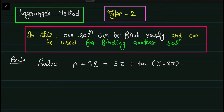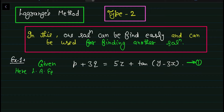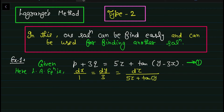Let's understand this with an example. We are given a differential equation — equation 1. First we write the Lagrange auxiliary equation. The Lagrange auxiliary equation will be: dx upon P's coefficient = dy upon Q's coefficient = dz upon the right-hand side. The first fraction, second fraction, and third fraction are formed — this is equation 2. From these fractions, we need to find two independent solutions.